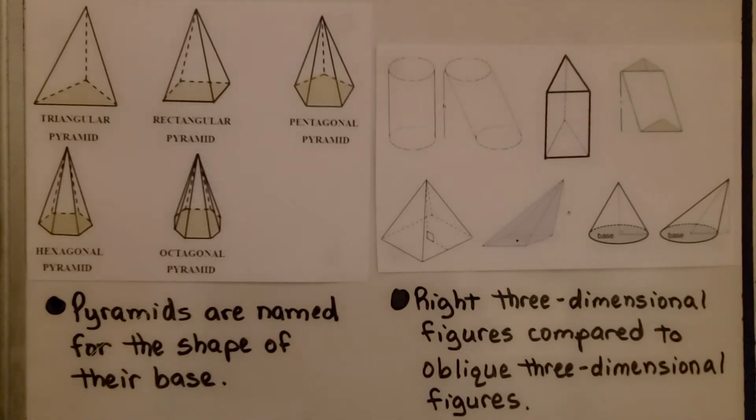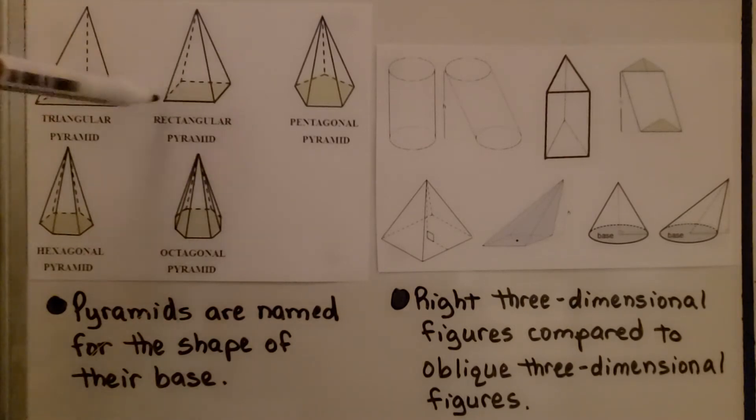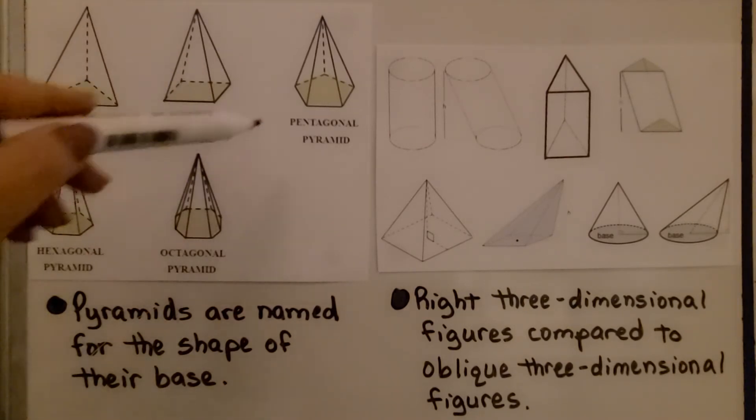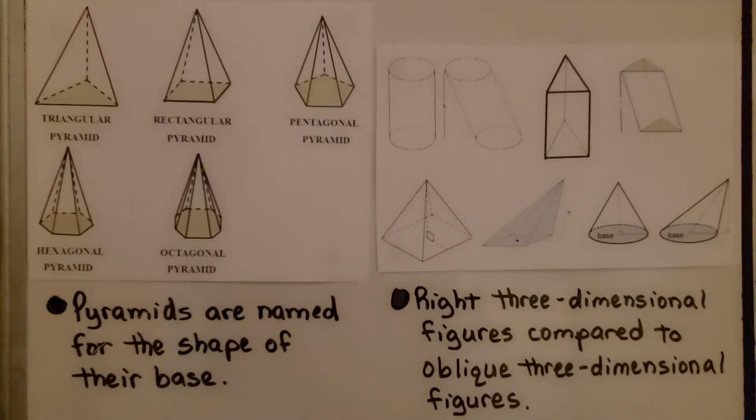So pyramids are named for the shape of their base. This is a triangle, so this is a triangular pyramid. This is a rectangle, that's a rectangular pyramid. This is a pentagon, so that's a pentagonal pyramid.